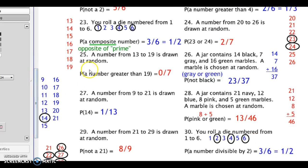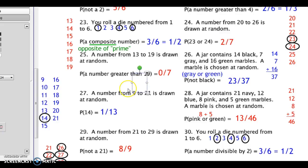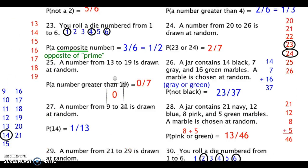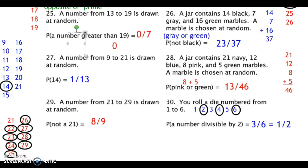I'd like to take a look at question number 25. It talks about a number greater than 19. In this case, there are no numbers greater than 19, so I would call that probability 0 out of 7 — another appropriate way to express that is simply 0. You can take a look at the rest of the exercises to see if they make sense.